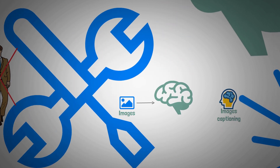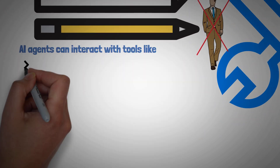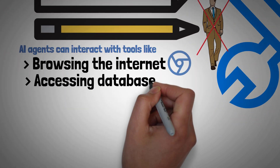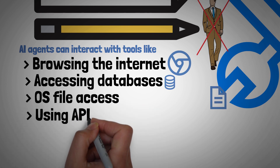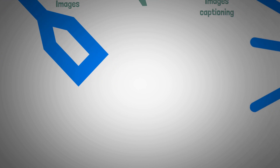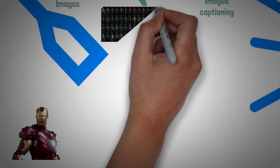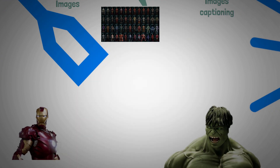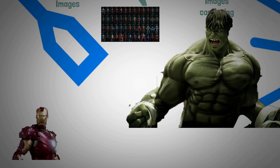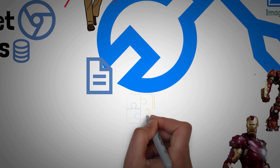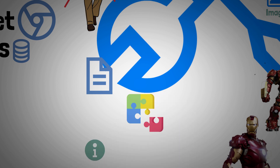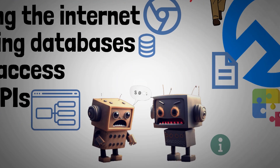Interacting with tools: AI agents aren't limited to their pre-trained knowledge. They can also interact with various tools, like browsing the internet, accessing databases, file access to your computer, as well as using APIs. What comes to mind is Iron Man, who has suits for every occasion. If he is fighting the Hulk, what suit would he use? The Hulkbuster, of course. So tool integration is crucial to gather information and perform tasks, extending their capabilities beyond a normal chatbot's static capabilities.